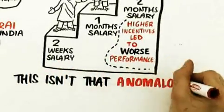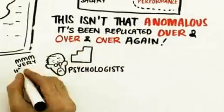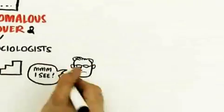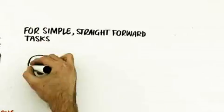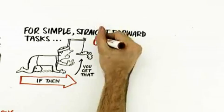What's interesting is that this actually isn't all that anomalous. This has been replicated over and over again by psychologists, sociologists, and economists. For simple straightforward tasks, those kinds of incentives - if you do this then you get that - they're great for tasks that are algorithmic, set of rules where you have to just follow along and get a right answer. If-then rewards, carrots and sticks, outstanding.